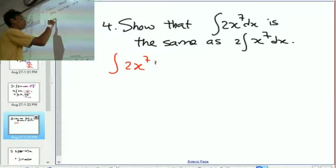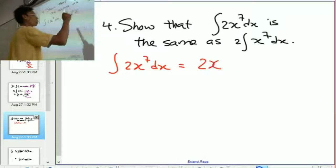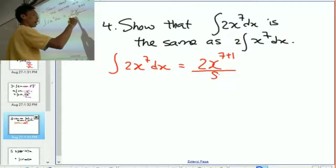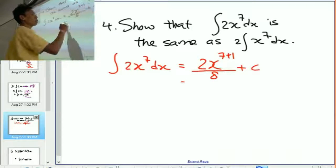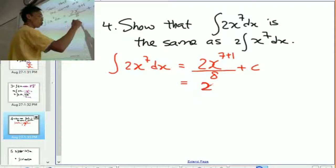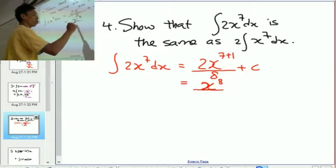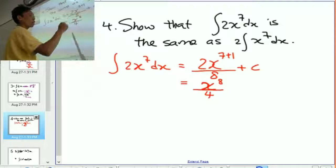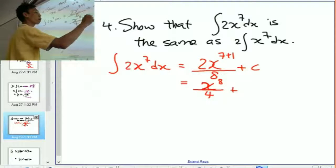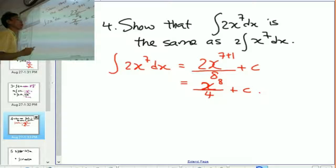Integrate 2x to the power of 7 dx. What is this going to be? Well, 2x, 7 plus 1, that's 8, divided by 8 plus c. So this is 2x to the power of 8. 2 over 8 is just going to be 2 divided by 8 is 1 quarter plus c. That's the first part.